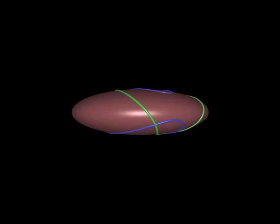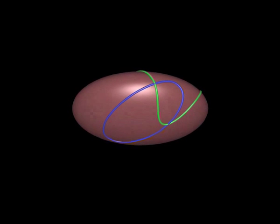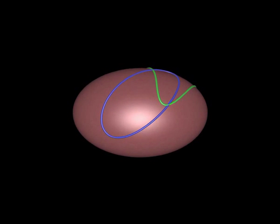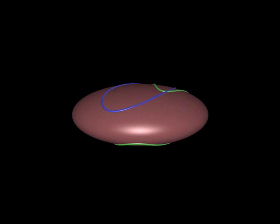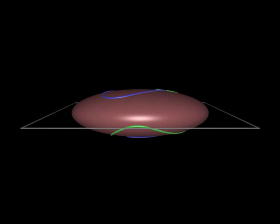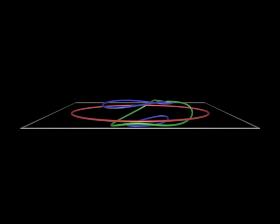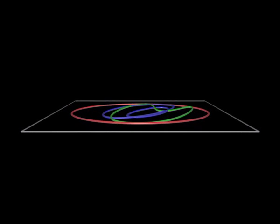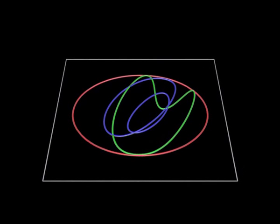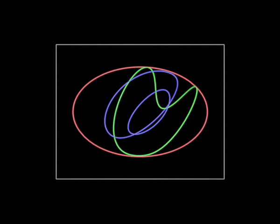You want to compute the arrangement with exact arithmetic, that means without rounding errors? Yes. But there is no rational parameterization of the spatial curves. Instead, we can orthogonally project the two curves together with the boundary of the red ellipsoid. This can be done using an algebraic tool called resultant. We obtain a two-dimensional arrangement containing all necessary information. In this step, we lose the spatial information.